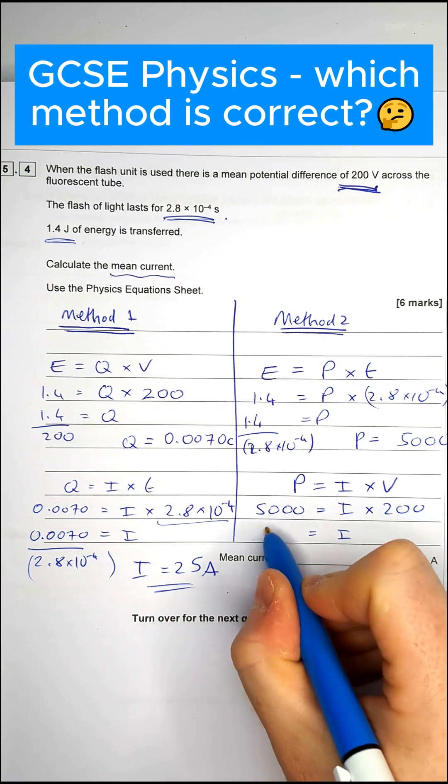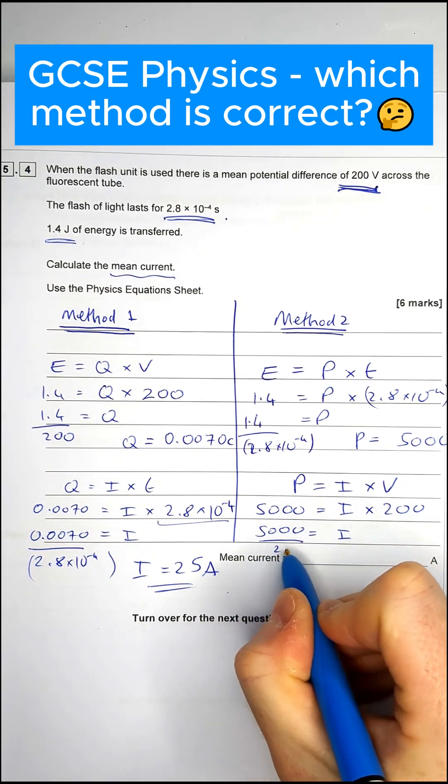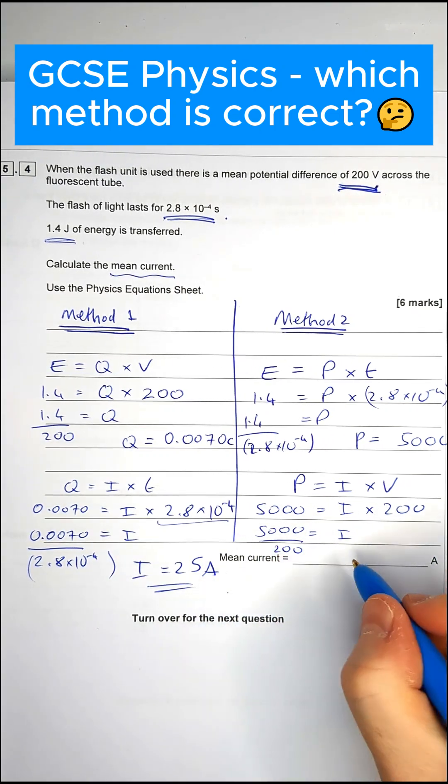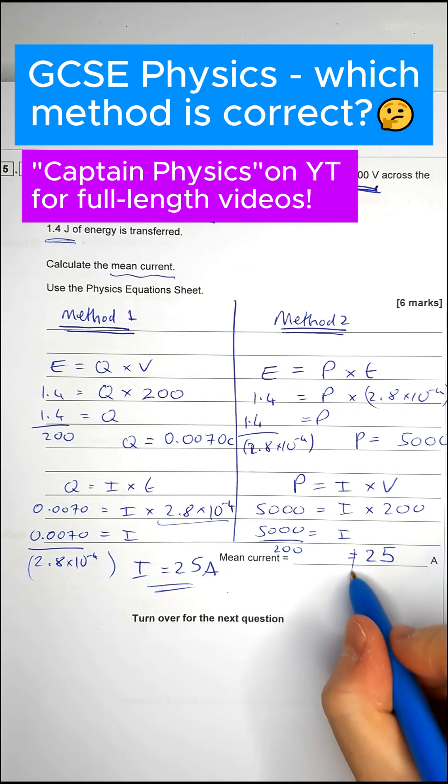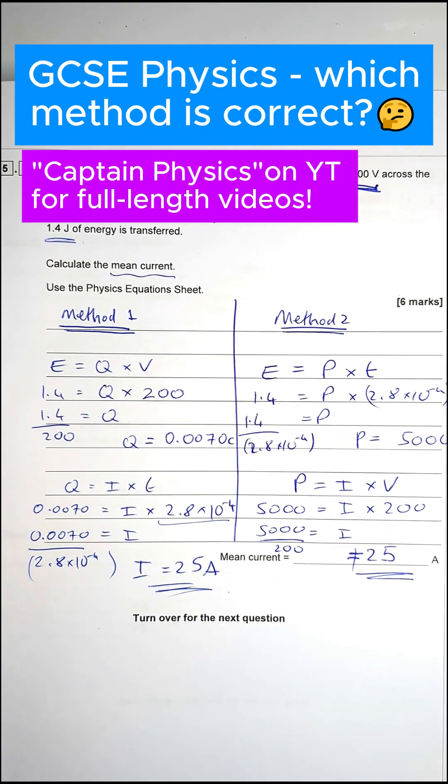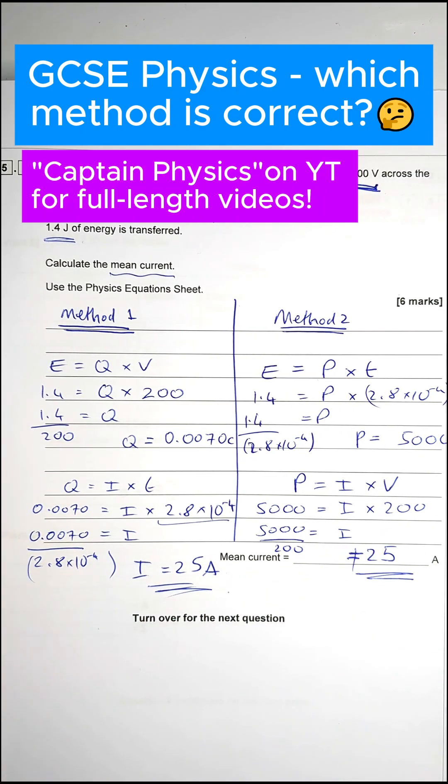So the current is equal to 5,000 divided by 200. And you might be able to see where I'm going with this. It's going to equal exactly the same thing. So sometimes questions can have the same answer by two completely different methods. Both valid because the equations all link together.